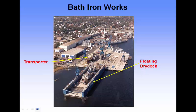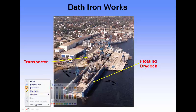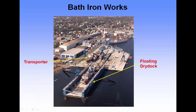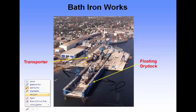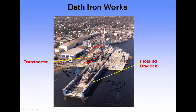Bath Iron Works does exactly that, using a floating dry dock with tracks. Their floating dry dock can be moved in either direction, locking vessels in place with the pier face and moving them into the yard at multiple locations, allowing work on multiple vessels at once instead of being constrained to just the vessel in the dry dock. The Coast Guard yard has similar capabilities with another vessel being worked on nearby.